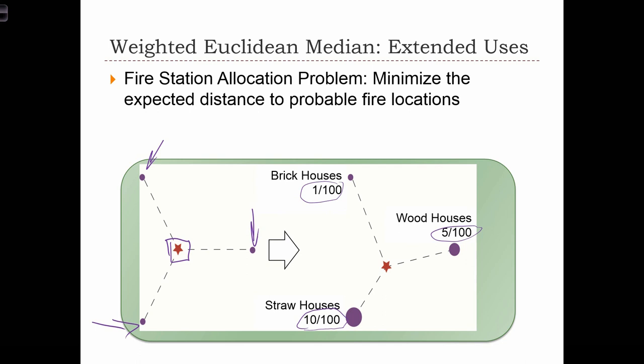That means that in order to optimize the location of our fire station, we want it to be slightly closer to the straw houses and we don't mind if it's slightly farther away from the brick houses, because most likely the fire trucks are going to have to serve fires in the straw house neighborhood more often. If we use these probabilities of fires as weights for these three locations, we would be able to use the weighted Euclidean median to find the optimal fire station location.